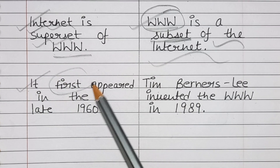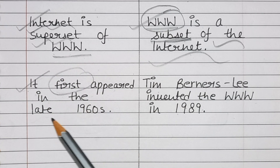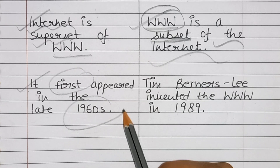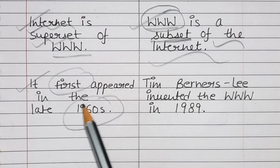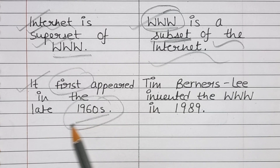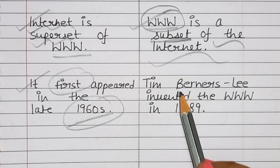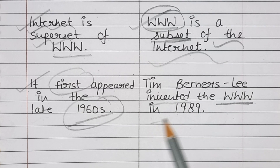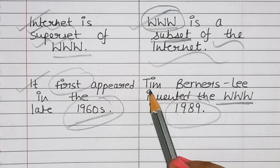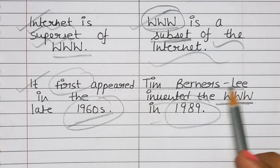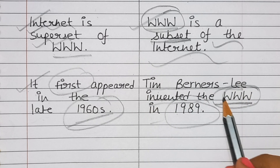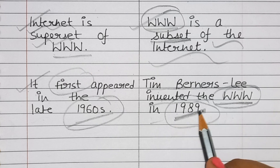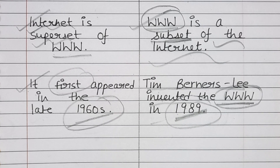Next difference: the internet first appeared in the late 1960s, while Tim Berners-Lee invented the world wide web in 1989.